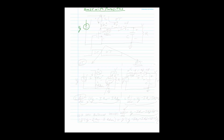Starting from V_G, I'll put the inductor, then the winding resistance of the inductor. The switch is not ideal — it will have an R_DS(on) when on. Then I'll add the diode with its resistance R_diode. Finally, there's the output capacitor and load resistor.